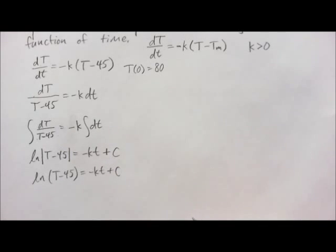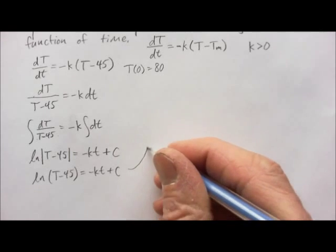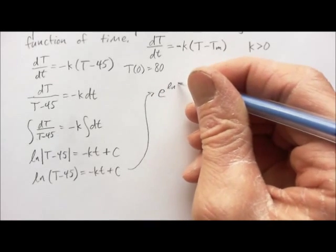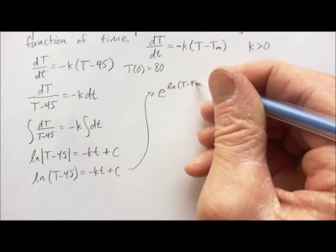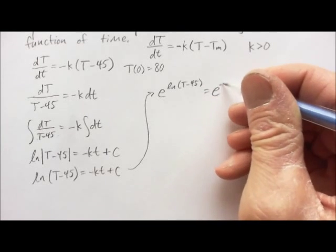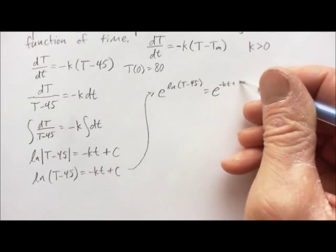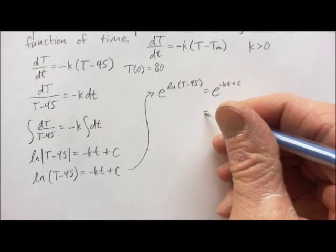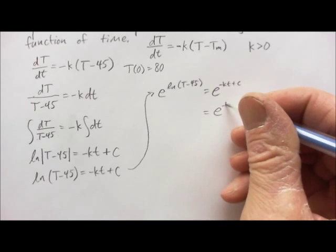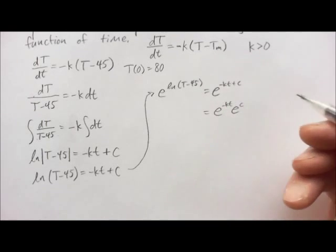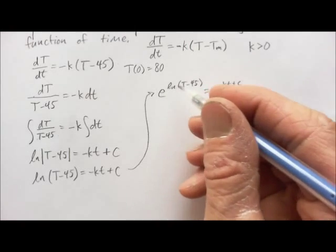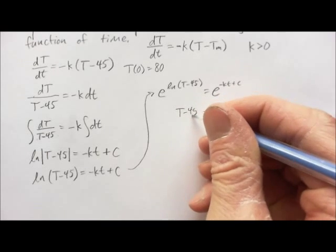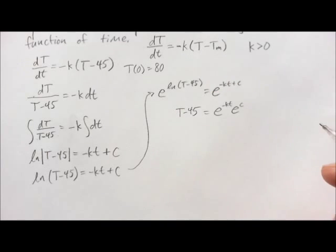So, we just have the natural log of capital T minus 45 equals negative KT plus C. And now, to get rid of the natural log, we exponentiate both sides. So, we have E to the LN of capital T minus 45 equals E to the minus KT plus C. And over here, we can split this into two separate parts. We have E to the minus KT and E to the C. Over here, the exponential and the logarithm cancel each other.